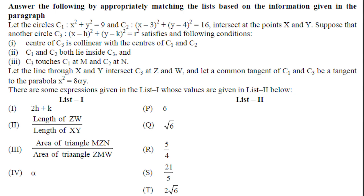Now here the question is, let the circle C1, C2 intersect at points X and Y and suppose another circle x minus h squared plus y minus k squared equals r squared satisfy the following conditions. Center of C3 is collinear with centers of C1 and C2. C1 and C2 both lie inside C3 and C3 touches C1 at M and C2 at N.